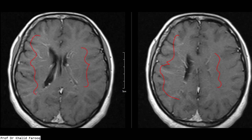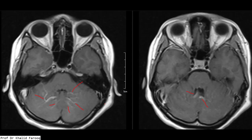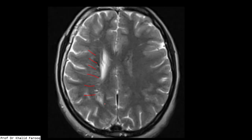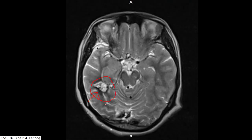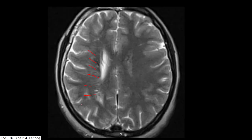Common presentations are: number one, seizures; number two, stroke, that is ischemic changes; and the third is intracranial hemorrhage. Usually these venous malformations or venous angiomas are an incidental finding and are usually seen in two to nine percent of cases.